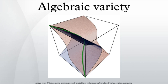A non-empty affine algebraic set V is called irreducible if it cannot be written as the union of two proper algebraic subsets. An irreducible affine algebraic set is also called an affine variety.